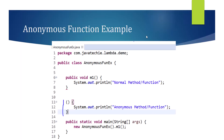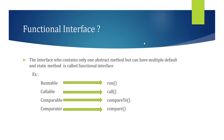A functional interface is an interface that contains only one abstract method, but it can have multiple default and static methods. In Java 8, inside an interface we can write default and static methods, but if it contains only one abstract method, it's called a functional interface. In Java, Runnable, Callable, Comparable, and Comparator are functional interfaces — Runnable has run(), Callable has call(), Comparable has compareTo(), and Comparator has compare().